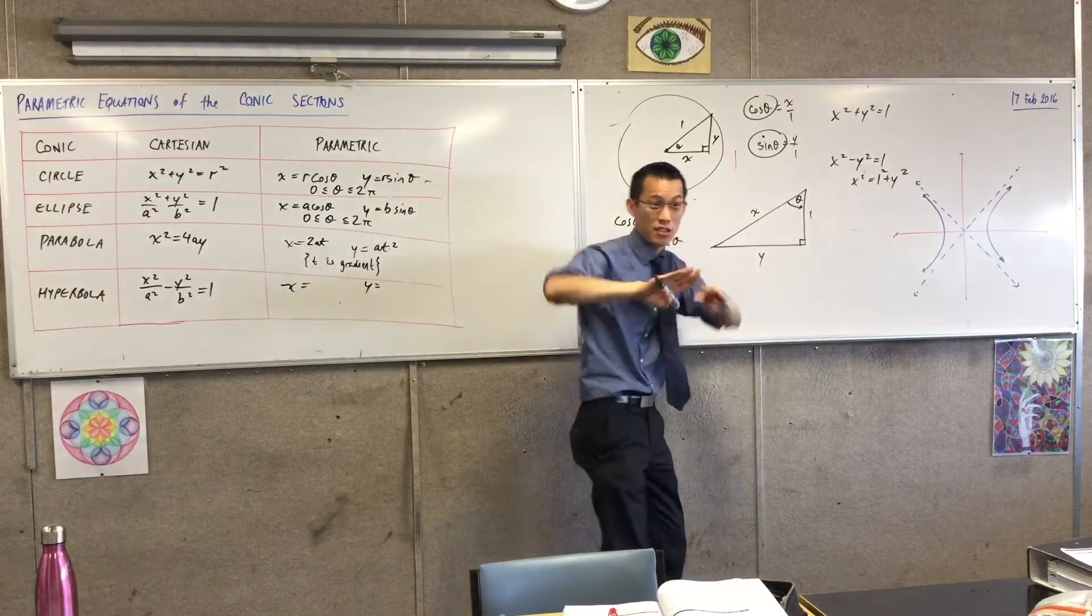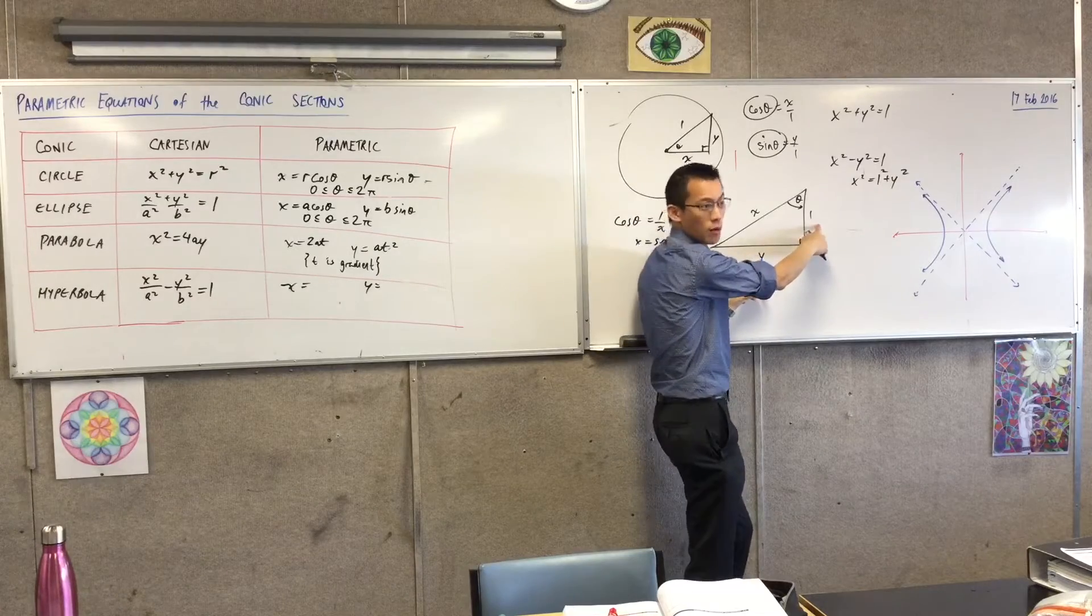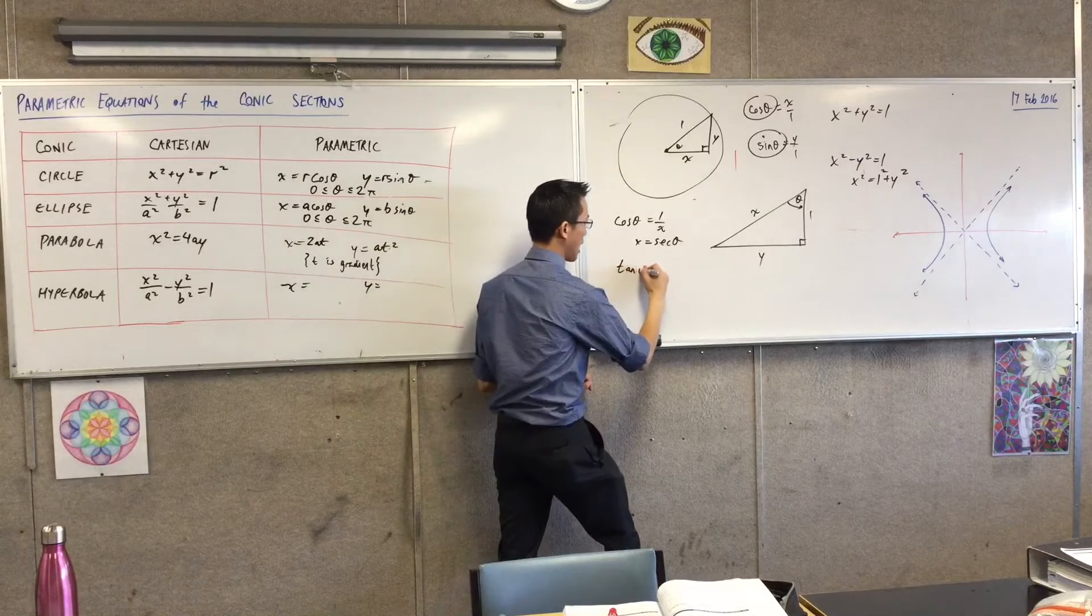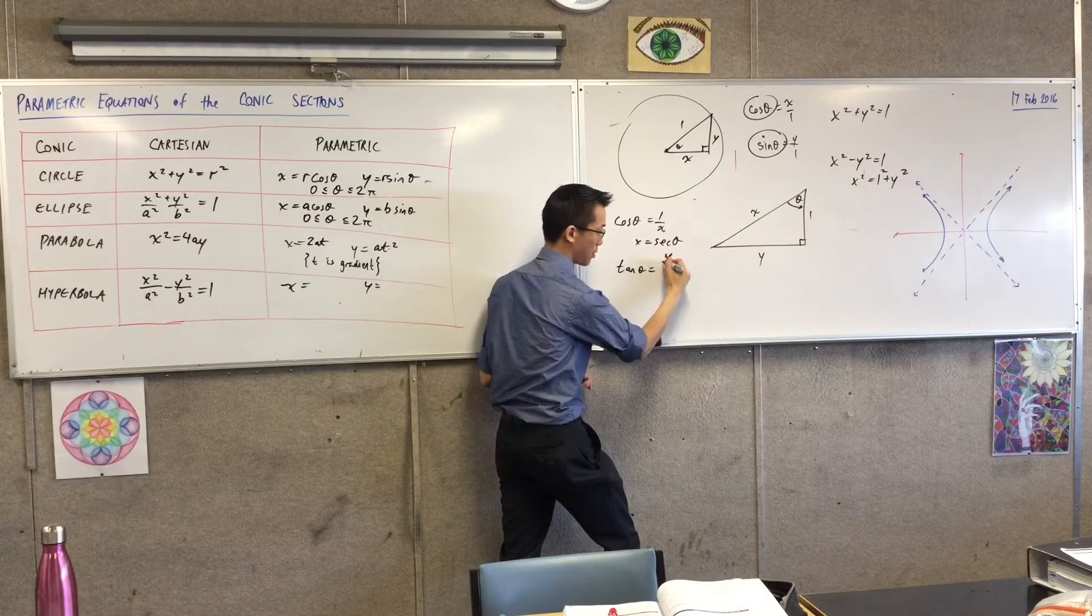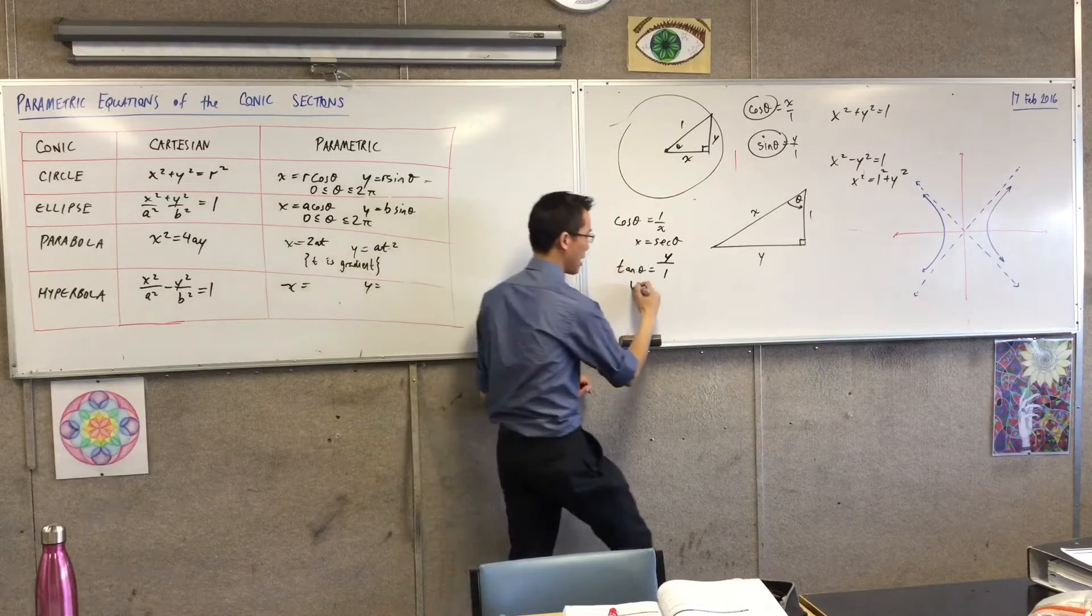The whole point of parametric equations is to separate x and y out. So I want to relate these two, and the ratio I would choose is opposite on adjacent, which is tan. So I would say tan theta equals opposite on adjacent. Does that make sense? So y is just tan theta.